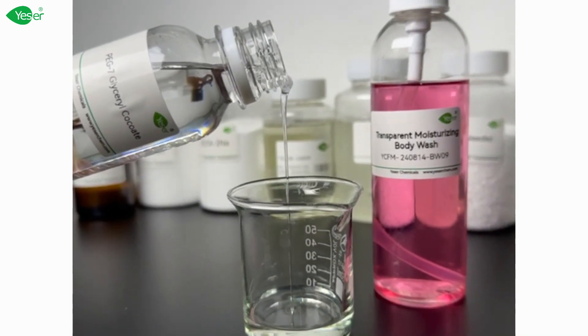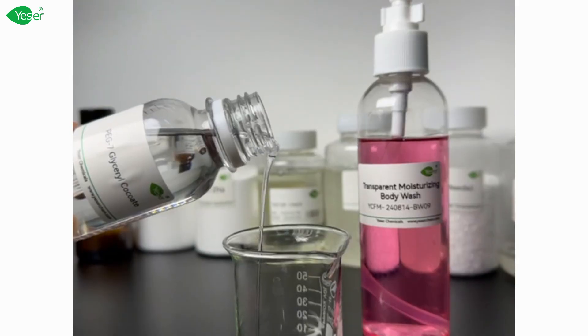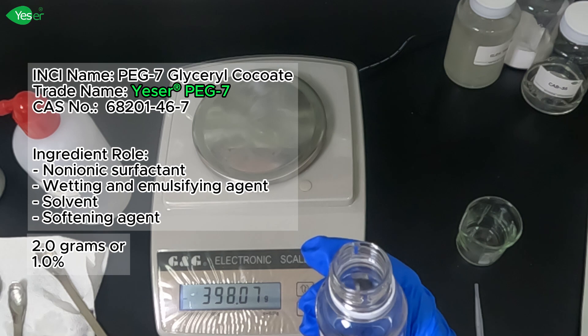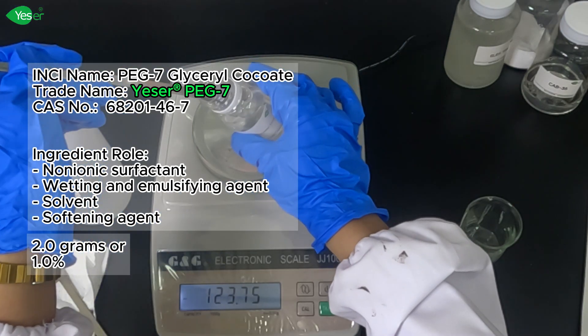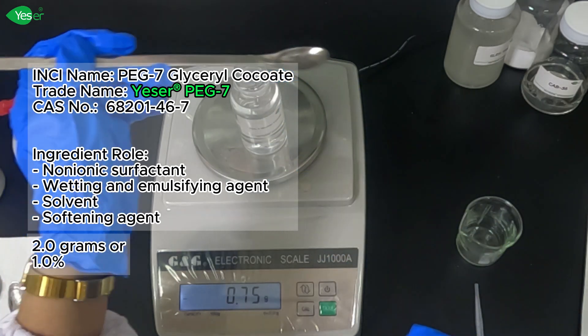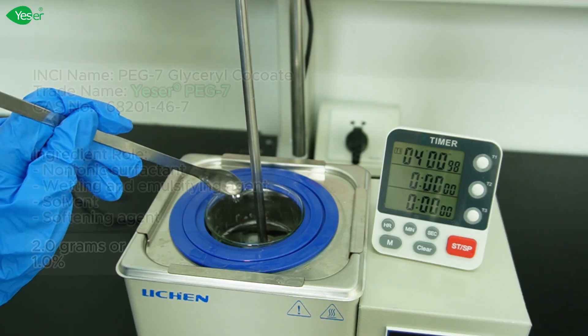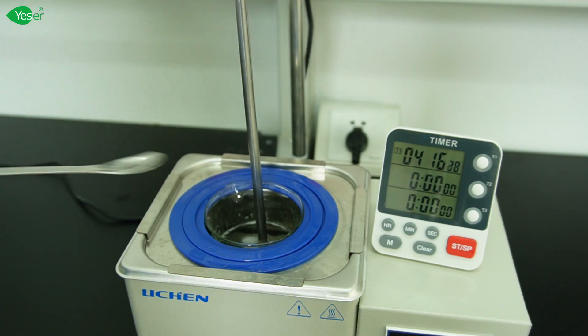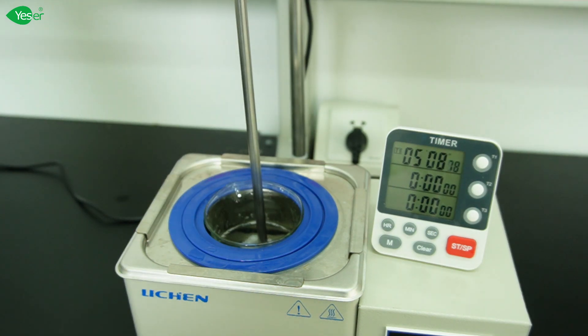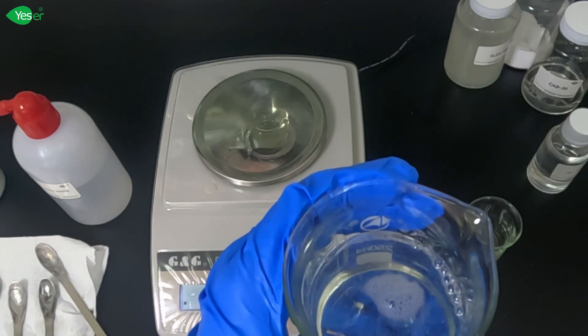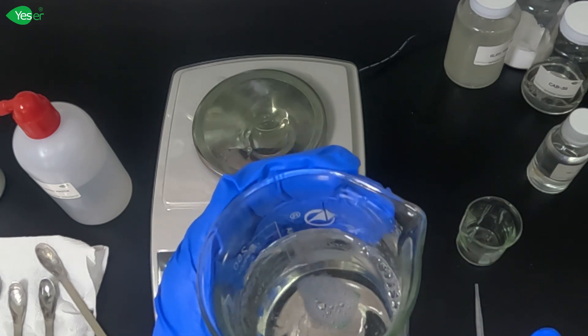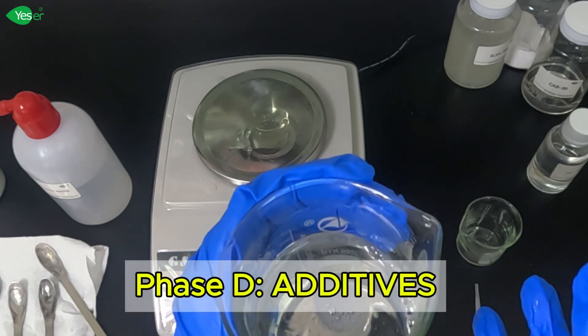This makes it an essential component for achieving that fresh, soft, and supple skin feel. Let's add 2 grams of this, 1% for our formulation. Stir this continuously until it is well incorporated in our formulation. Let's cool this down further until we reach 40 degrees temp and we will add our additives after that.